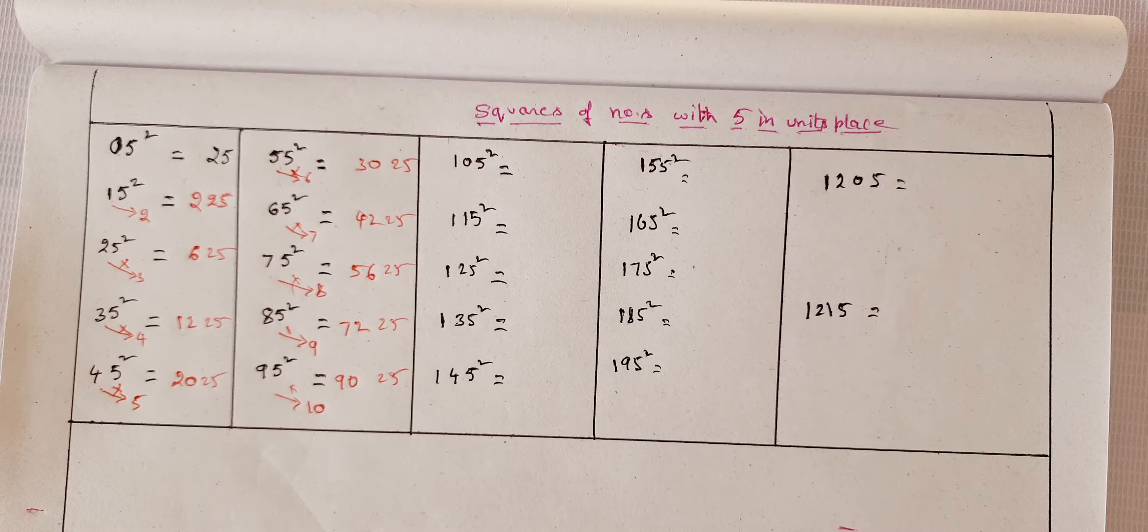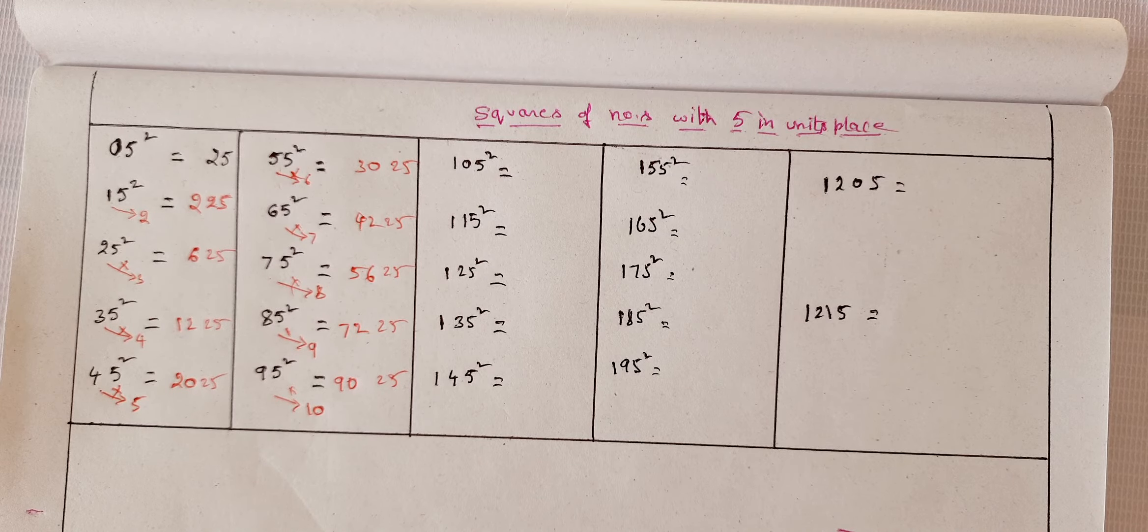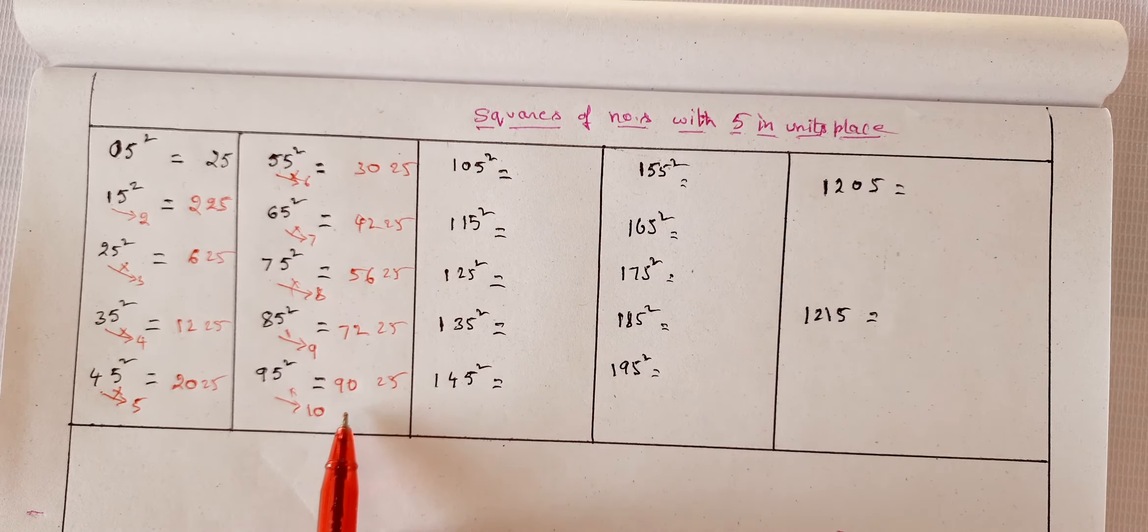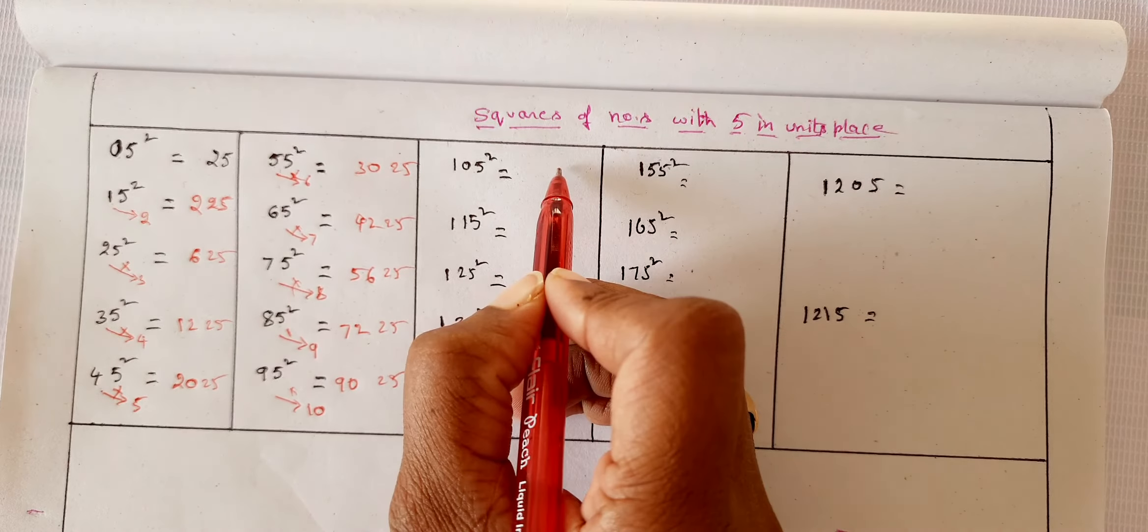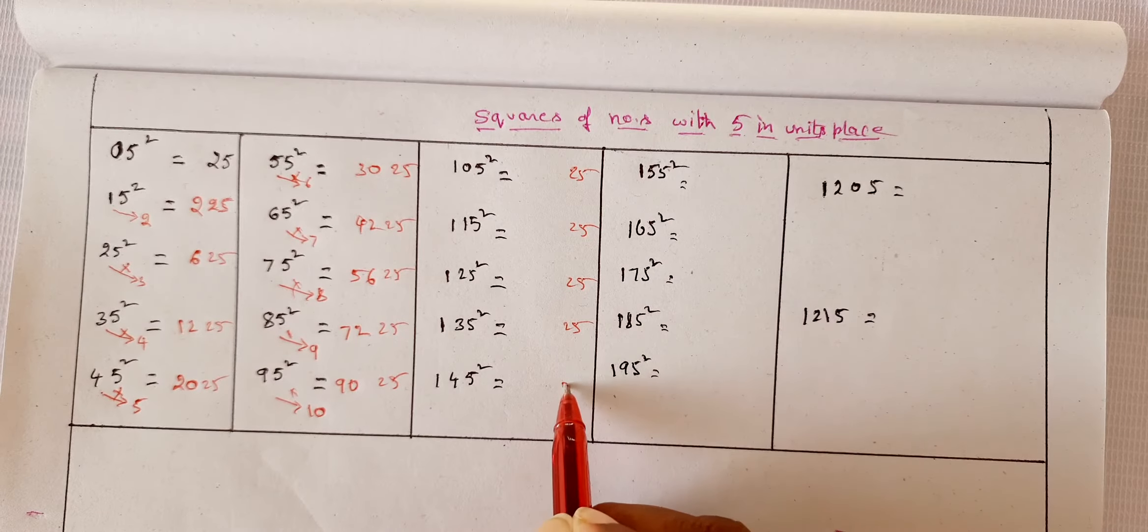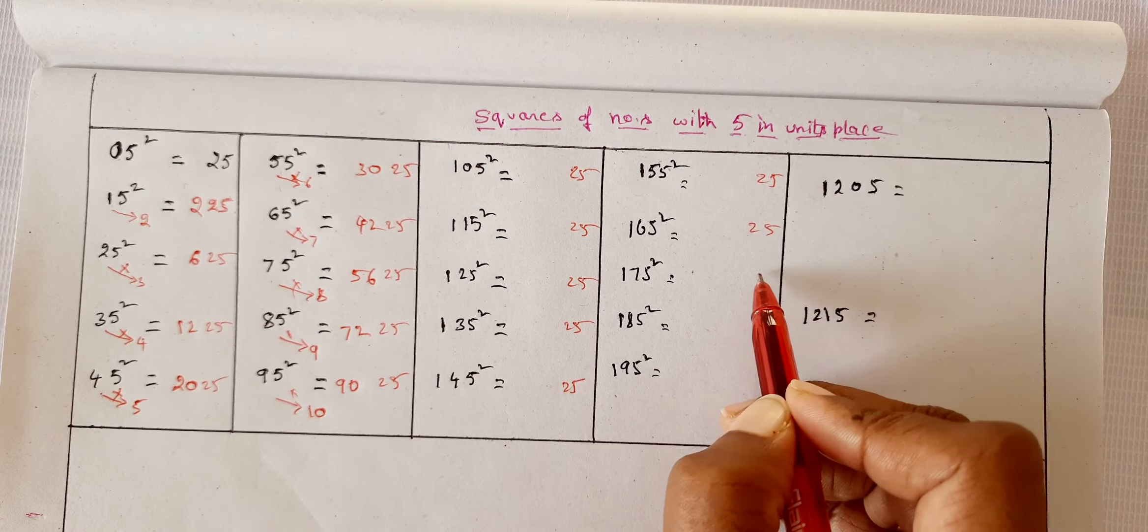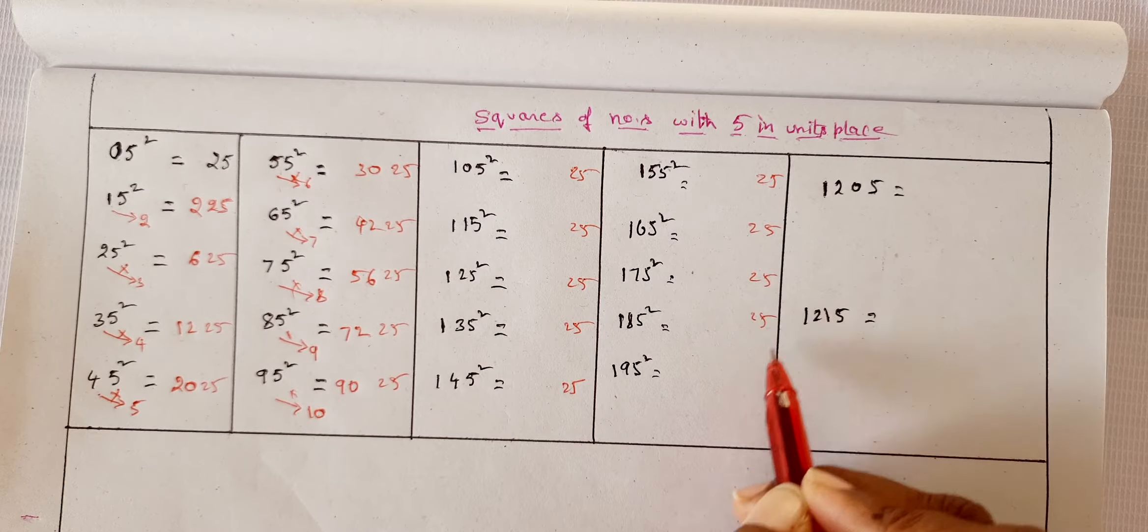7 into 8 is 56. 8 into 9 is 72. 9 into 10 is 90. Wow, what a trick! So whenever you find a number having 5 in units place, then this is how you can do it.